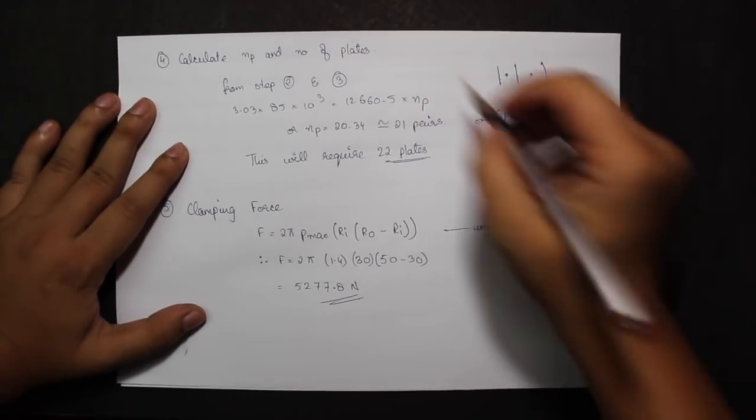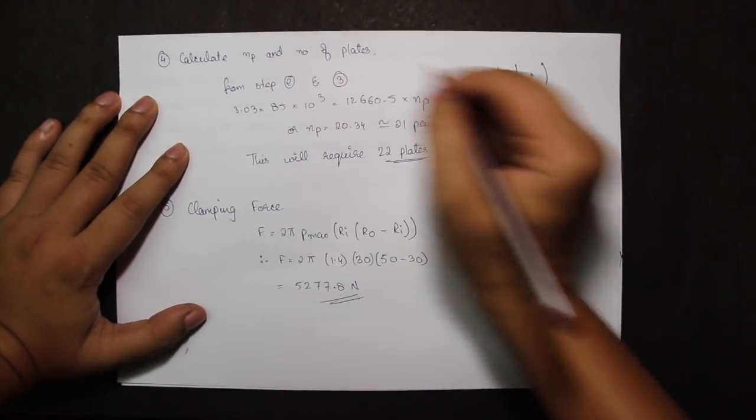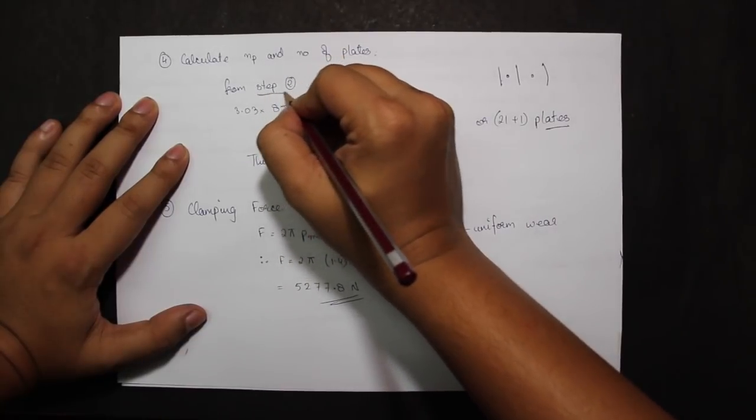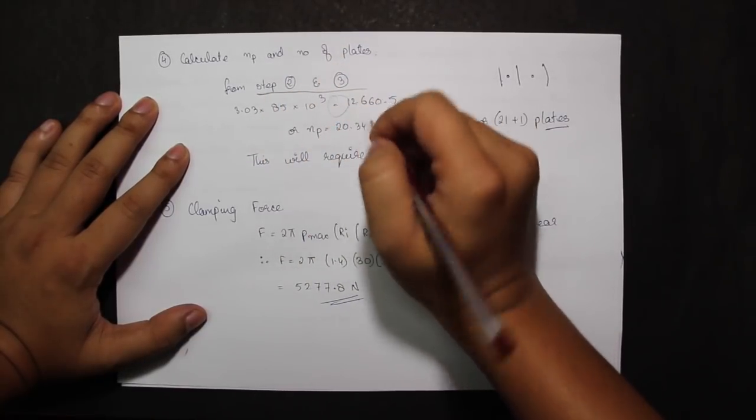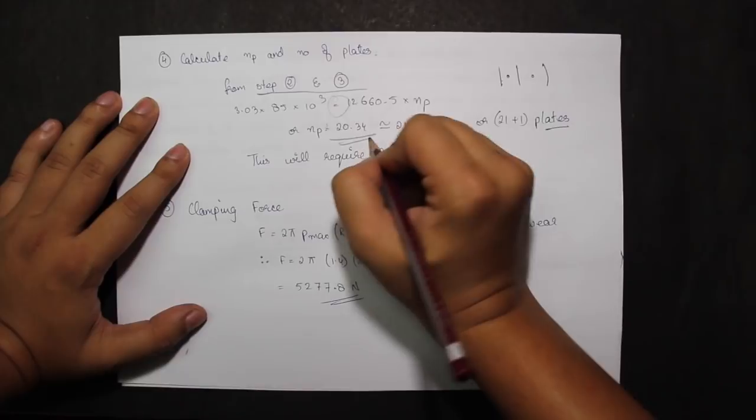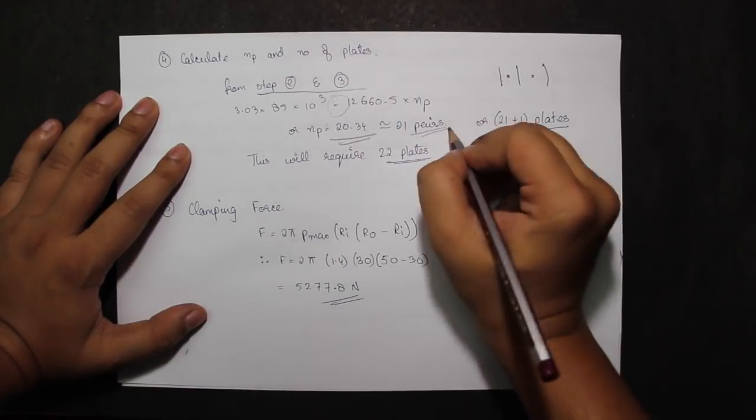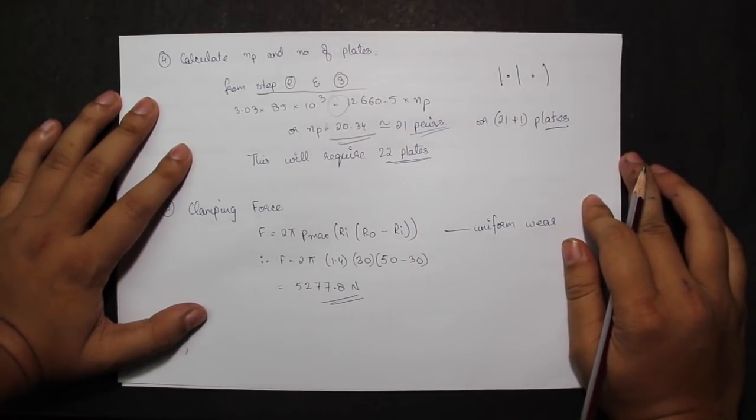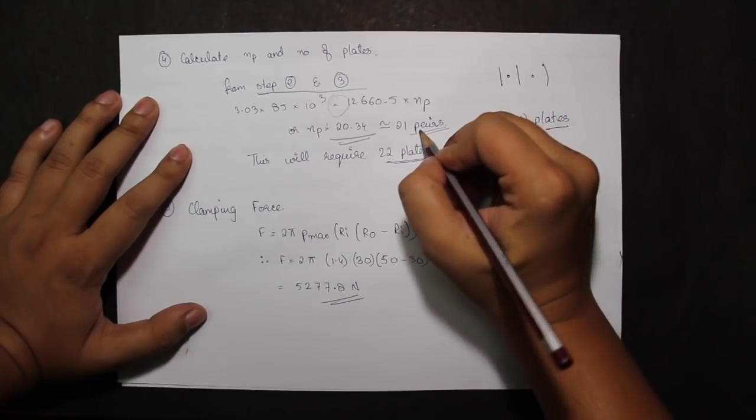Calculation of NP and number of plates will be done by steps 2 and 3. When equating both of them, I find that NP turns out to be 20.34, or approximately equal to 21 pairs.